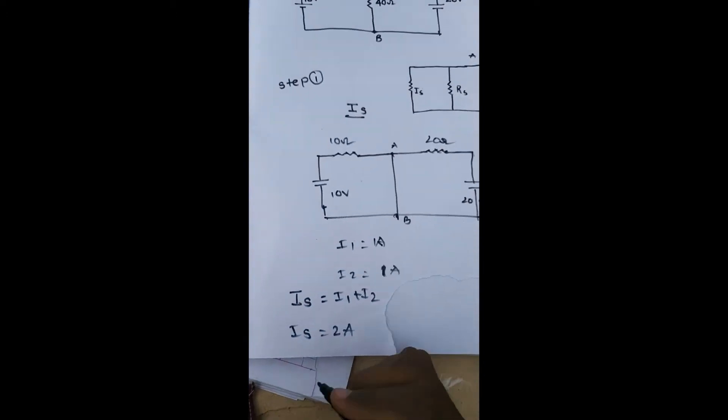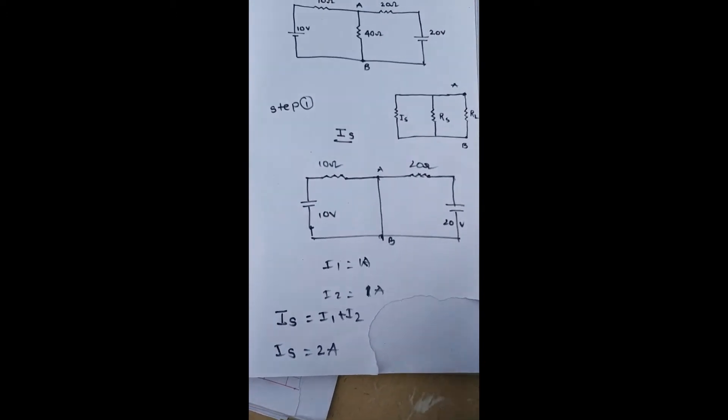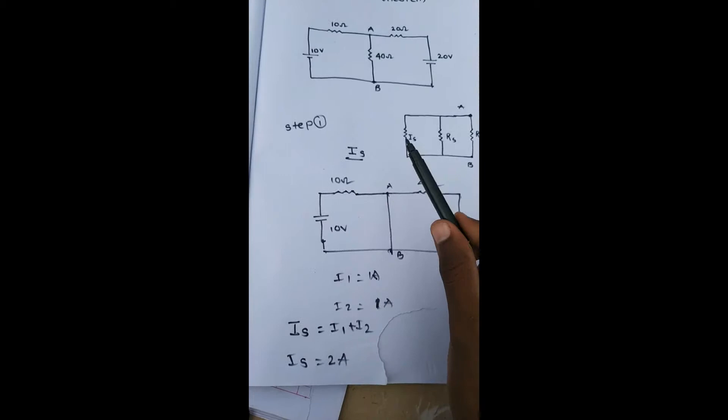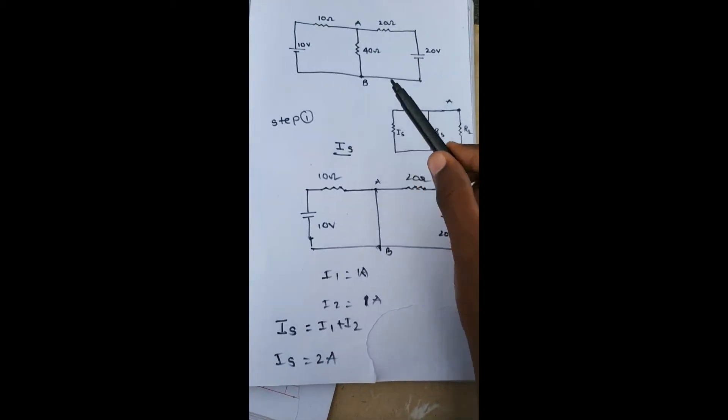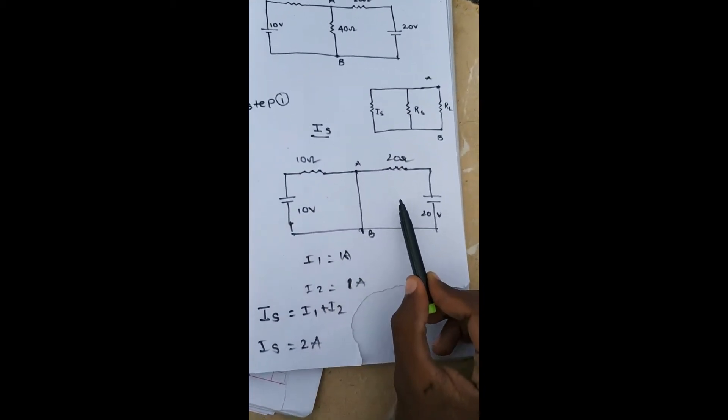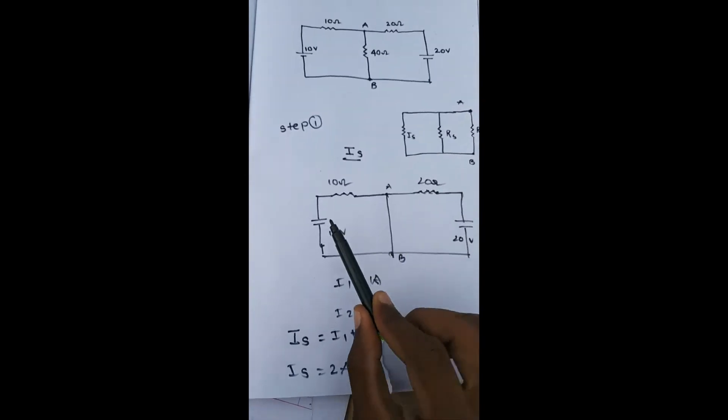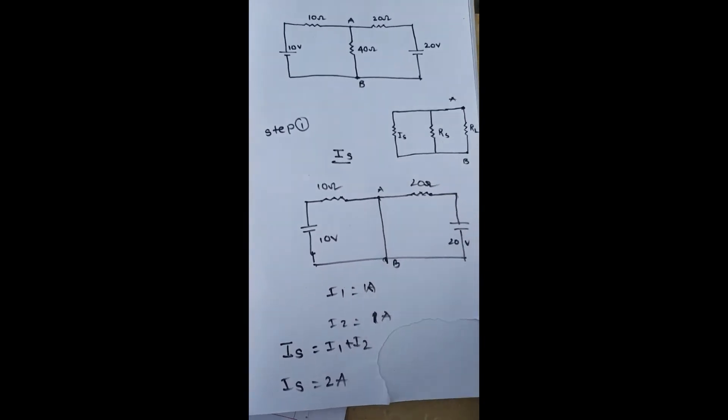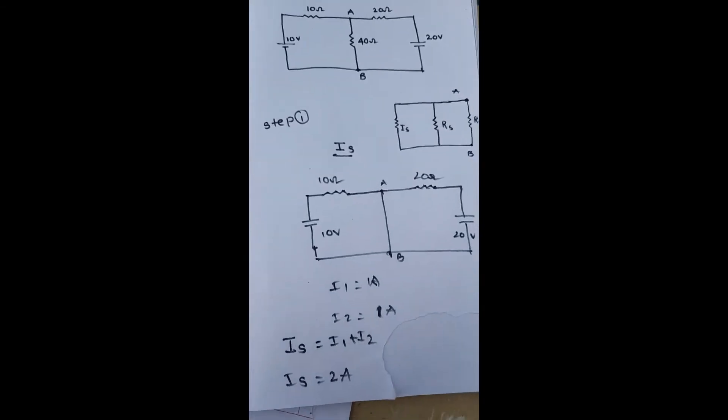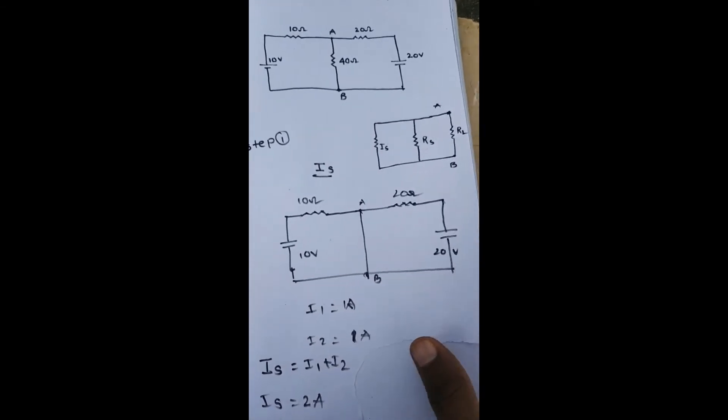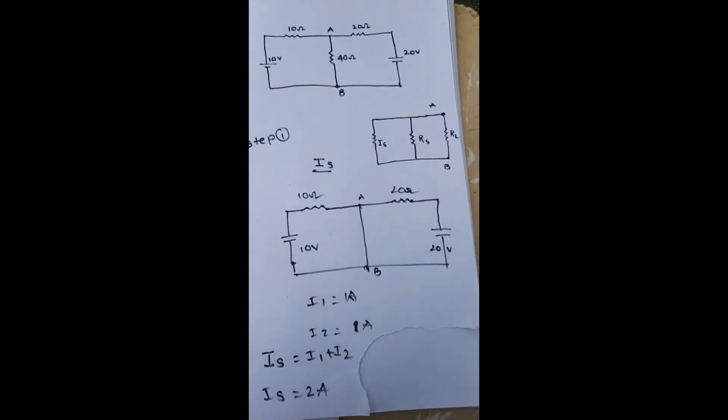So Is value is 2 amp. Is value is found when the 40 ohms is short-circuited. This circuit has two loops, so we found i1 and i2 values, and Is value equal to i1 plus i2. Is value is found. So next we have to find Rs value.